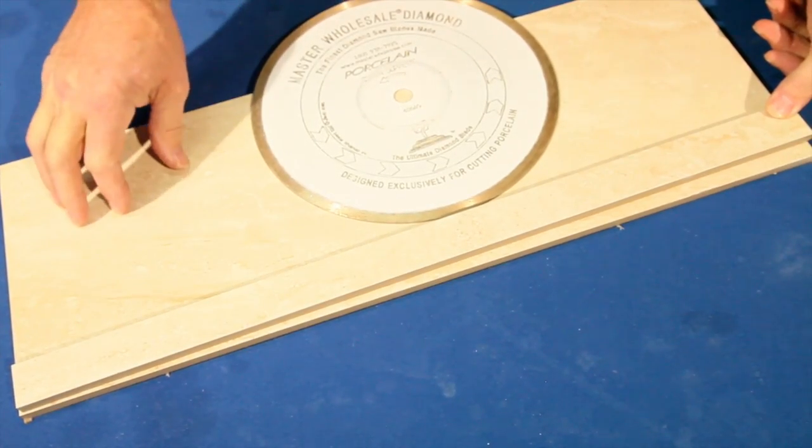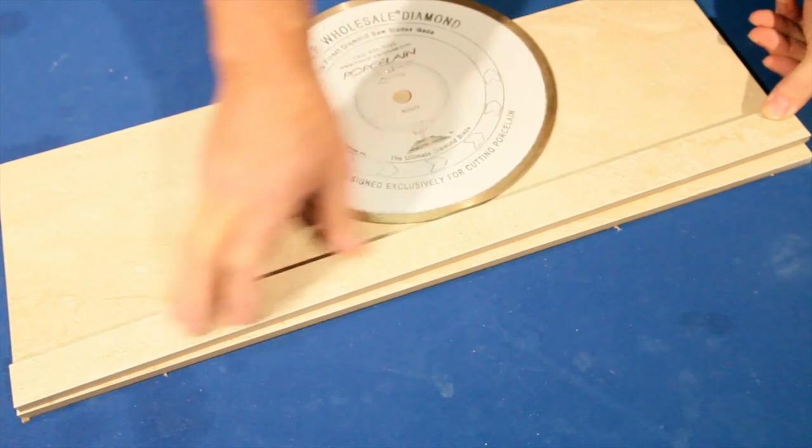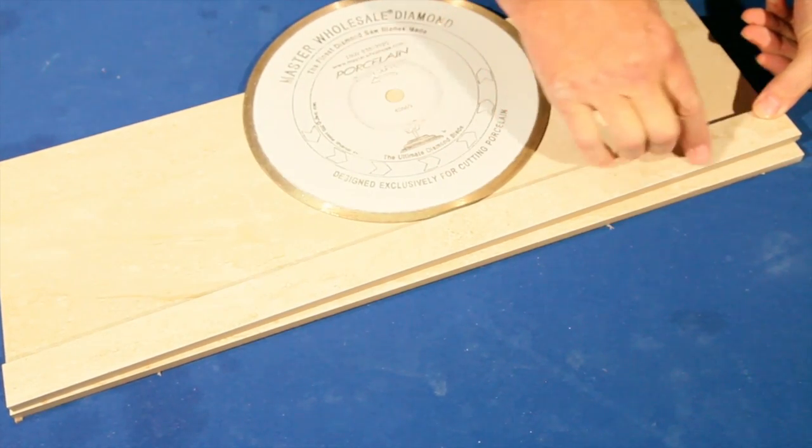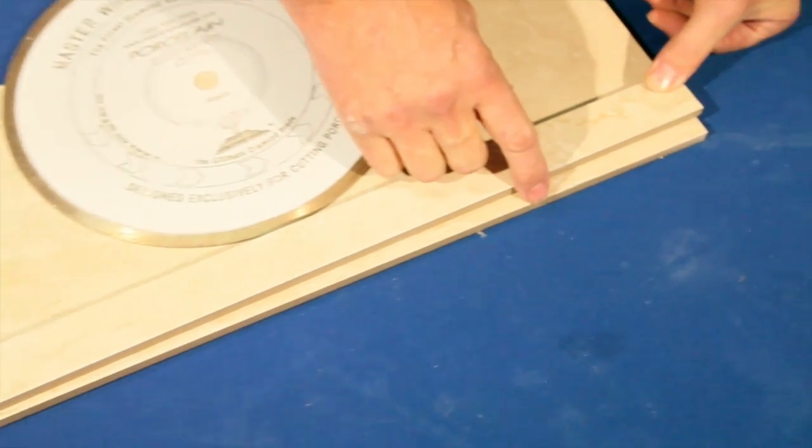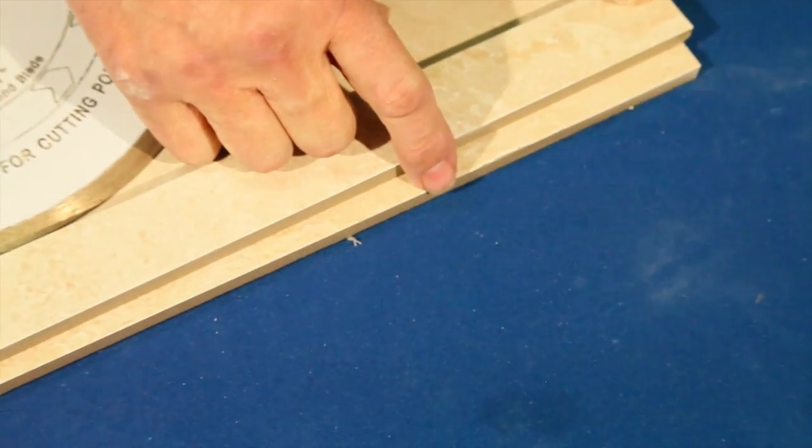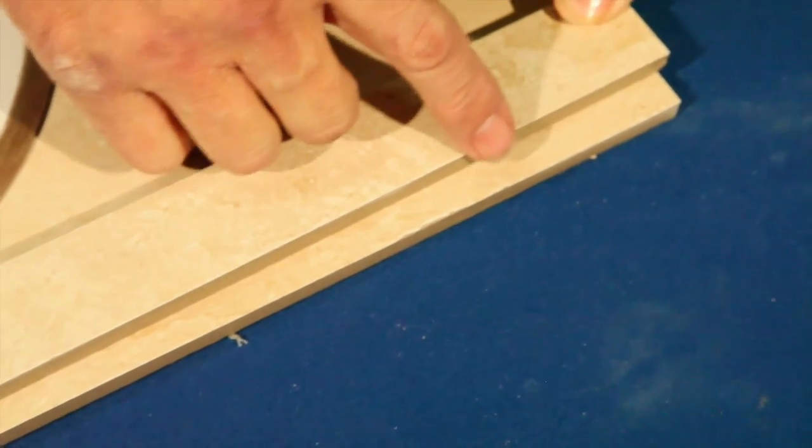So the Master Wholesale blade, as you can see, had quite a bit less chipping than the other blades, although it did have a little bit chipping right here. We like to just point out the fact again that this is a glazed porcelain, so any chips are going to show up.